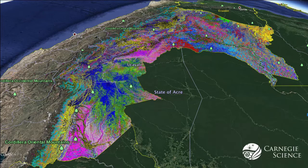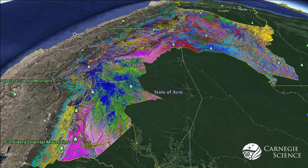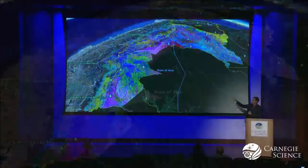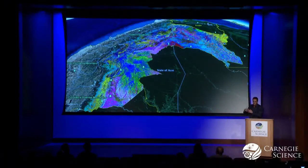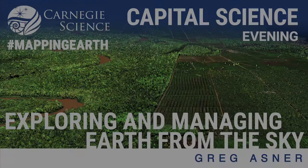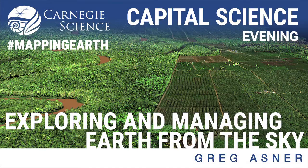These different colors are where the different communities of species change. Why is there a pattern? We figured it out. It's because of the geology that underlies the Amazon, the elevation, and other factors that have to do with how species interact with one another. So, let's go back to Peru.